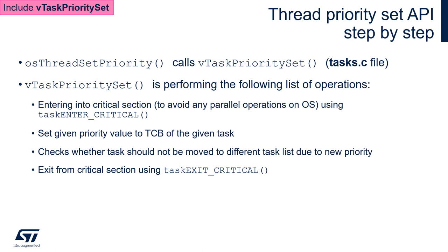Once in this safe condition, we can check whether the task should be moved to a different task list due to the new priority. It can happen that when we decrease the priority of a running task using priority set, the task will land in the ready list much below the currently executed priority level. The scheduler checks whether such a situation will take place and plans to switch the context accordingly. At the end, we exit the critical section using taskEXIT_CRITICAL to unfreeze all OS-related interrupts and resume OS execution.